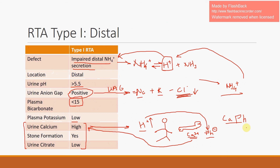Calcium phosphate stones form for two reasons. First, there is excess calcium in the urine. But also, recall from Step 1 boards that calcium phosphate stones form in the presence of excessively high urine pH — and indeed, urine pH is most elevated in type 1 RTA. This all makes sense together. When urine calcium is high, it follows that urine citrate will be low, because citrate chelates calcium. So if urine calcium is high, we expect urine citrate to be low.